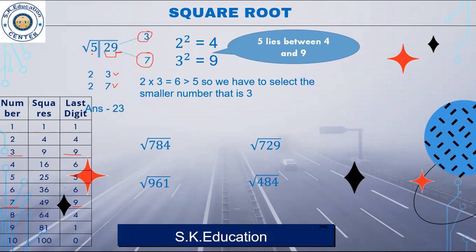Then next is the group 5. To find out where 5 falls, 5 lives between 4 and 9. So 4 is 2 squared and 9 is 3 squared. So you will write here the smaller digit, that means 2. So we have 2 and 7, giving possible answers 23 and 27.